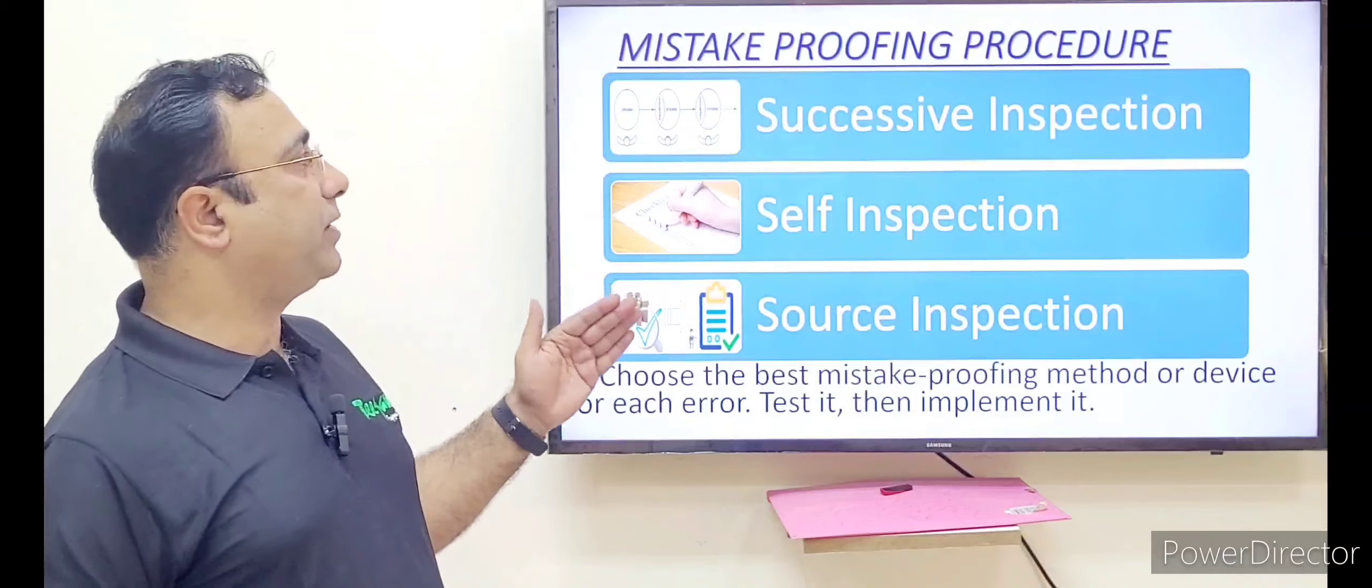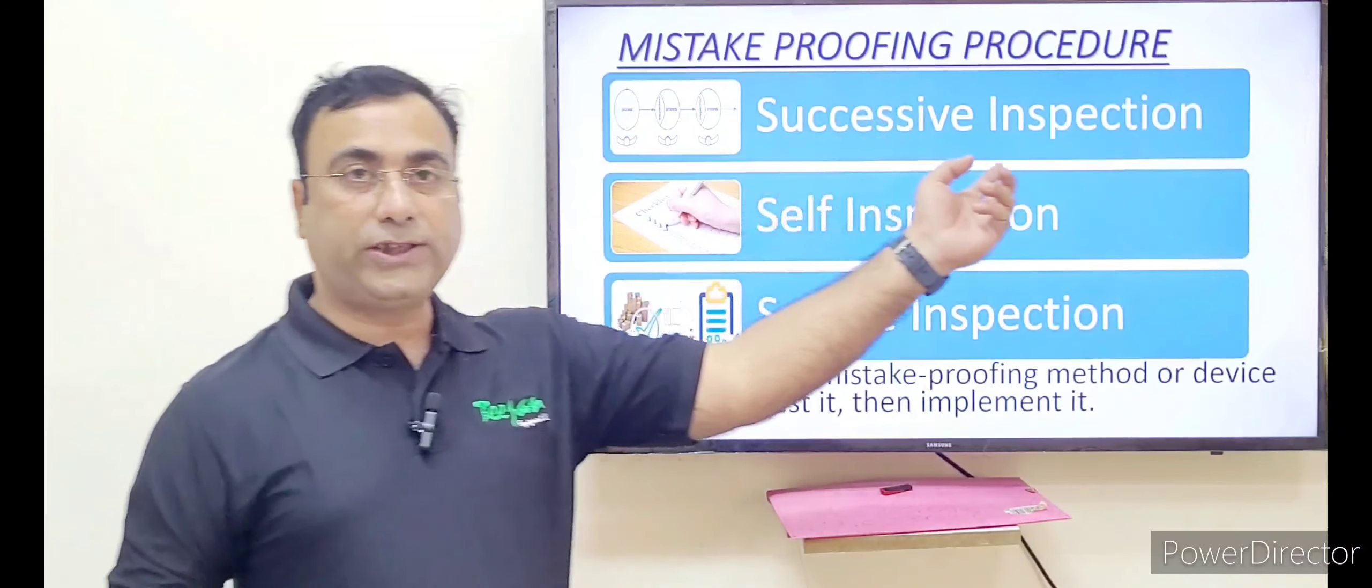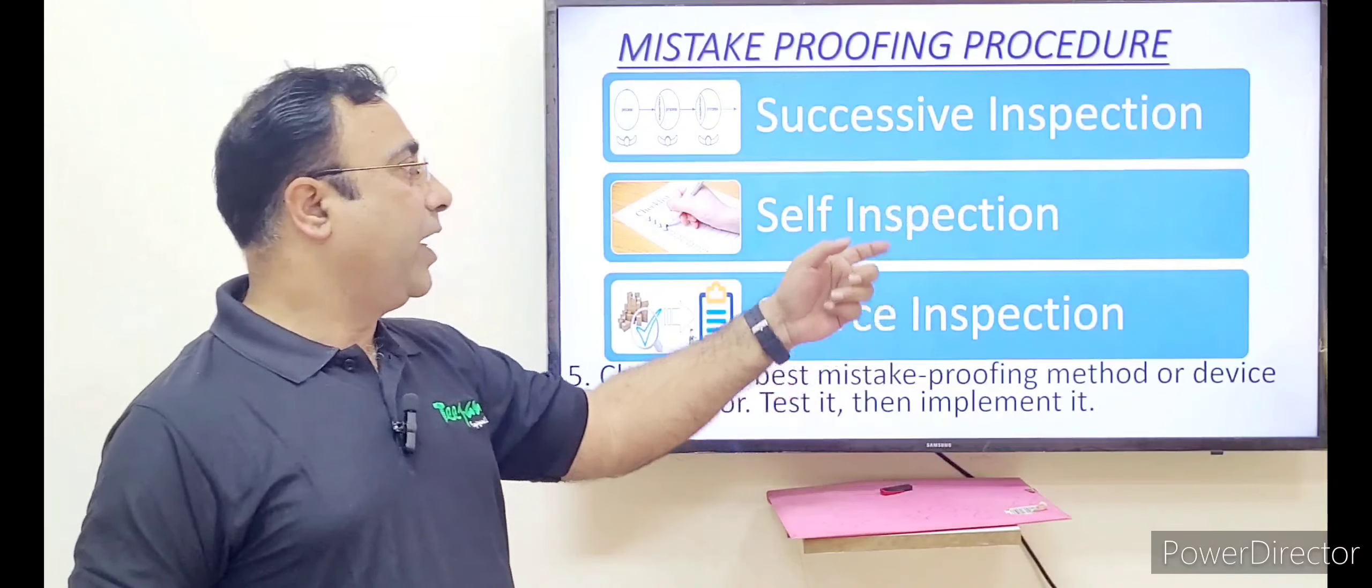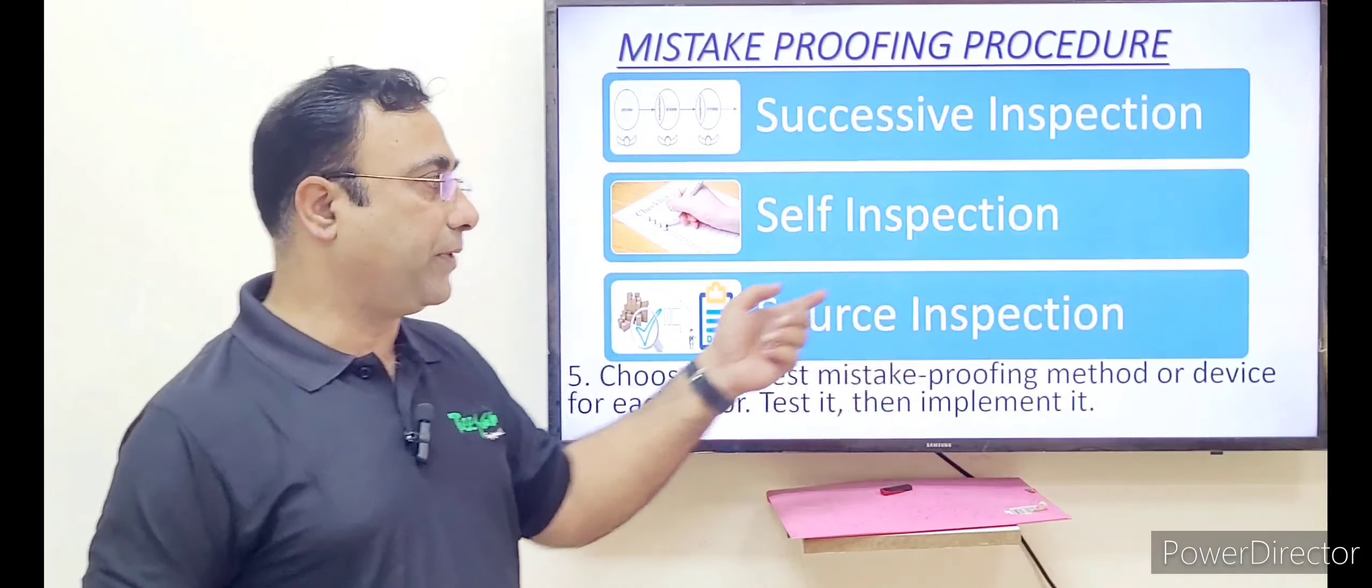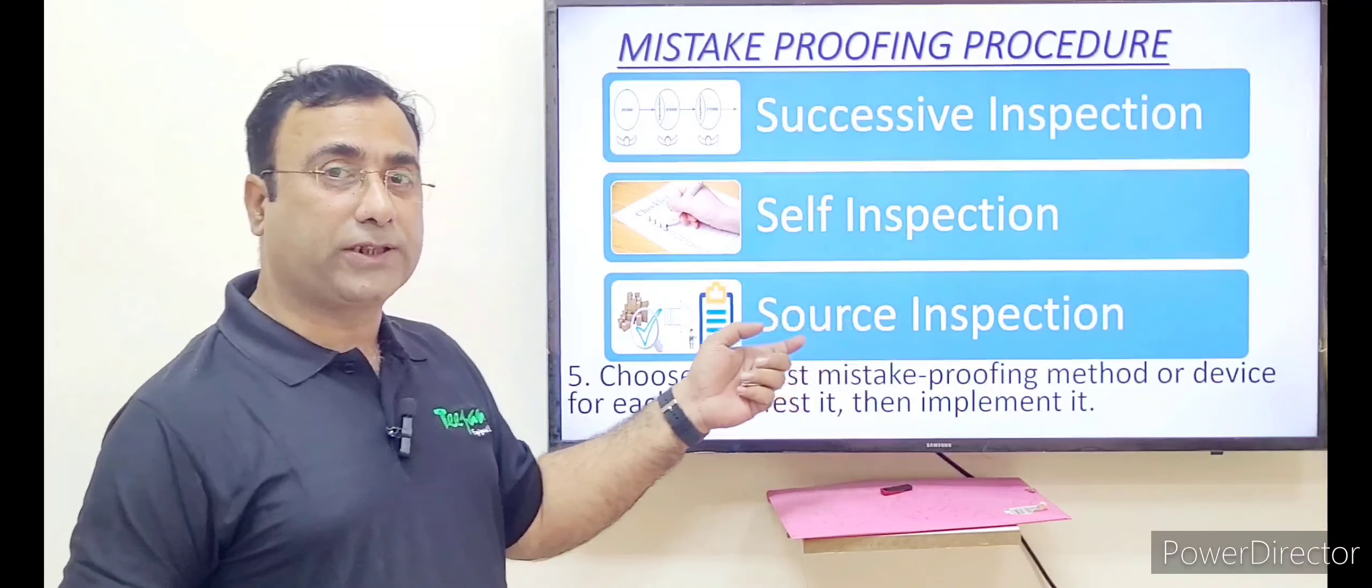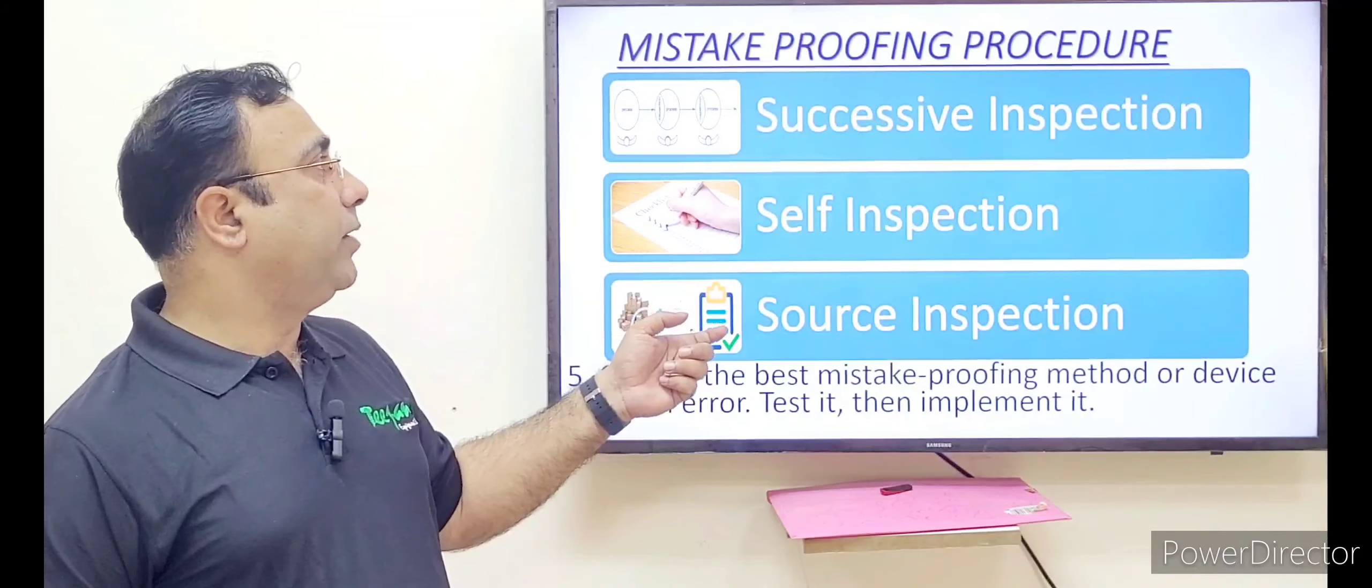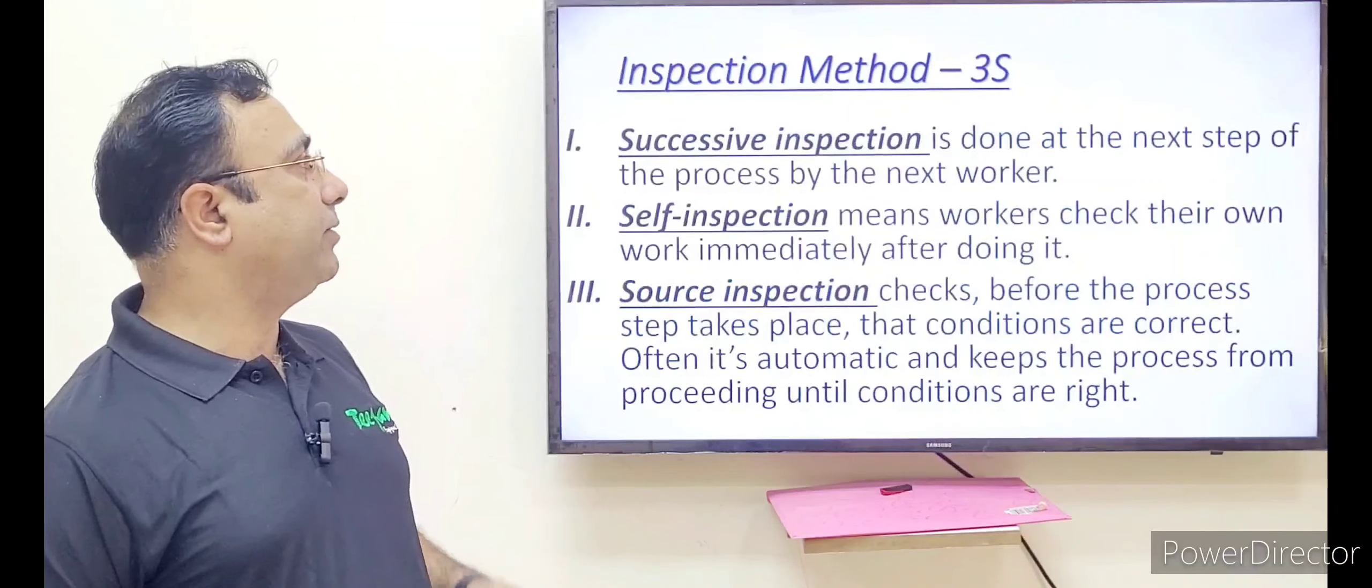In the inspection, there are three inspections. First is successive inspection, self-inspection and the third is source inspection. Source inspection is quite important, but we are starting with the successive inspection.